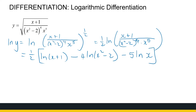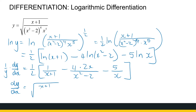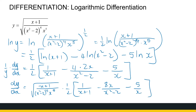Now we differentiate. The derivative of ln(y) with implicit differentiation is (1/y)·dy/dx. The one half stays as a constant factor. The derivative of ln(x + 1) is 1/(x + 1), minus 4 times the derivative of ln(x² − 2), which is 1/(x² − 2) times 2x, minus 5/x since the derivative of ln(x) is 1/x. So dy/dx equals y — that whole original function — times one half times the bracket, which simplifies to give 8x/(x² − 2) minus 5/x.